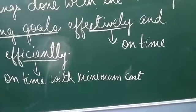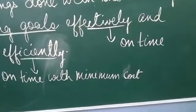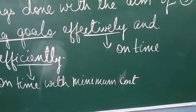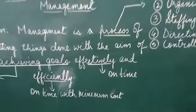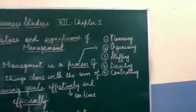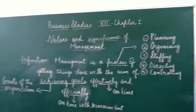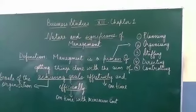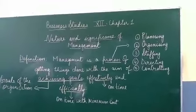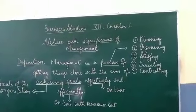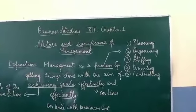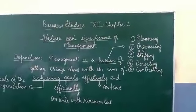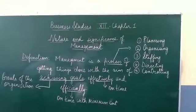So when we study the definition of management, we say that management is a process - not one but all 5 activities or functions - of getting things done in the organization with the aim of achieving goals effectively, that is the goals have to be achieved on time, and efficiently, that is not only on time but with minimum cost.